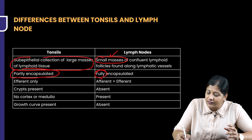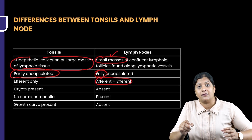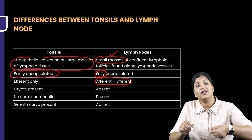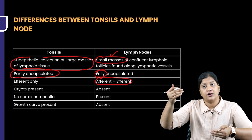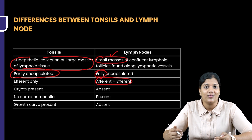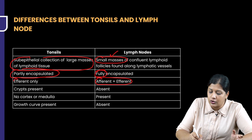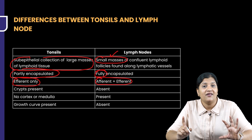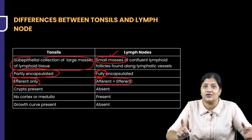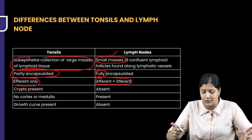In a lymph node, we have got an afferent and an efferent because it's a part of the lymphatic system. There's an afferent and an efferent going from the lymph node, but in a tonsil, do we have an afferent? No, we have only the efferent. So, the efferent system is present in the tonsil but the afferent is not.